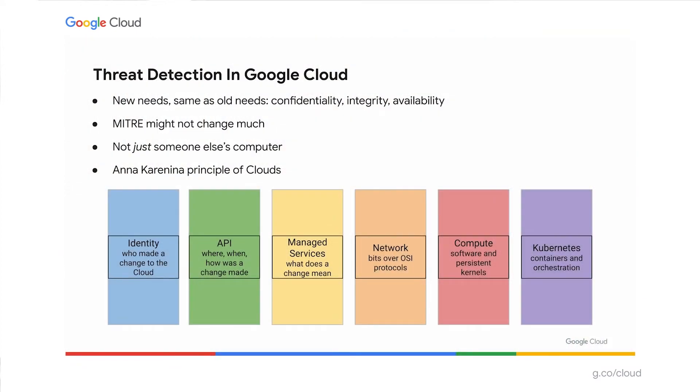Before I dive into the demo, I want to give you a quick overview about how we think about threat detection in cloud. If you've read our blog post on threat detection in cloud, parts one and two, some of this may seem familiar. There's really good news and bad news when it comes to threat detection in cloud. The good news is that your needs as a security professional coming to cloud don't change — you still need to keep your data confidential, run software you trust, and keep your systems available. When it comes to MITRE ATT&CK, your tactics don't change, but the tactics and procedures that adversaries use to achieve those goals change dramatically.